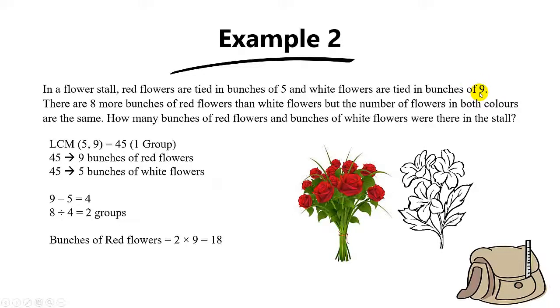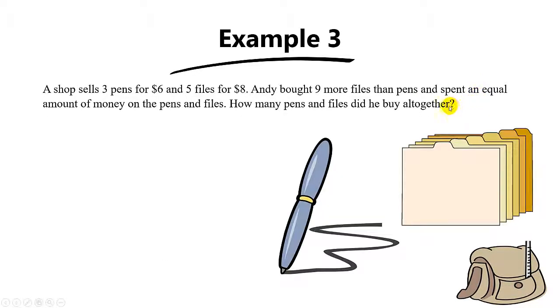In example 3, the question says that Andy spent an equal amount of money on the pens and the files. So can we find a common multiple of 3 and 5? No, right? Because these are actually the number of the pens and the files.